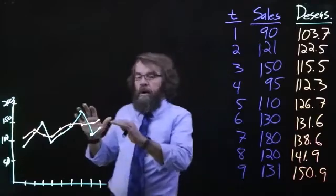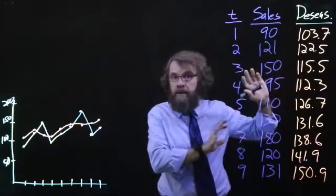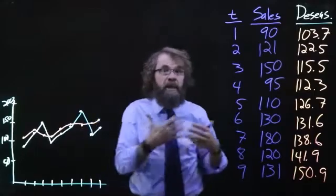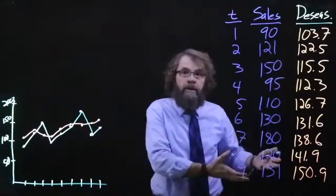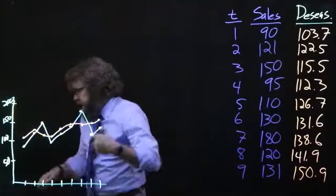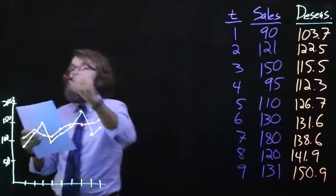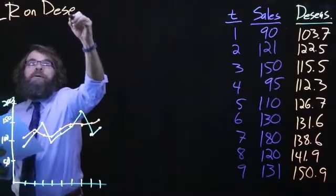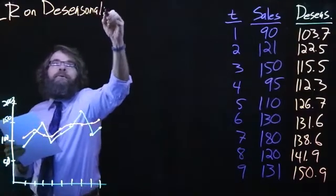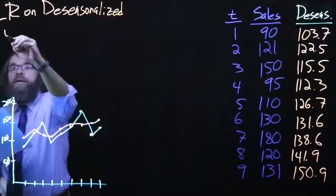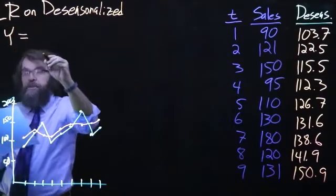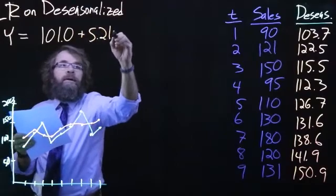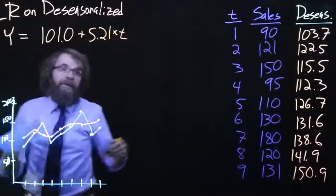So I've done the linear regression on the de-seasonalized data. We do it on the de-seasonalized data. What do we get? We get that y is equal to 101.0 plus 5.21 times t. So this is what you get from a linear regression.